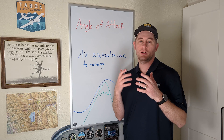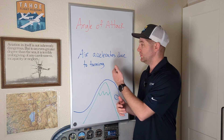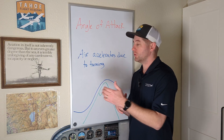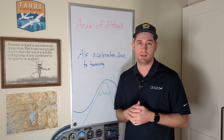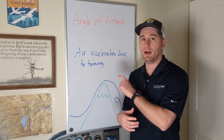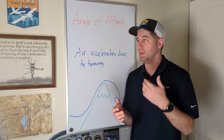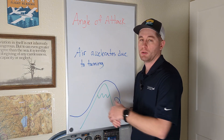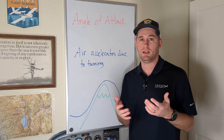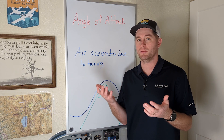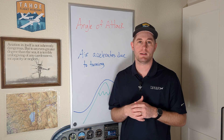So the answer to why the air accelerates over the upper surface of the wing is due to turning — the more the air turns, the more it accelerates, and thus the more lift is generated. This is why many airfoils have a curved upper surface: it allows the air to turn more. But a symmetrical airfoil can still generate lift, and an aerobatic airplane in inverted flight can generate lift — it's all because of turning and having a positive angle of attack.